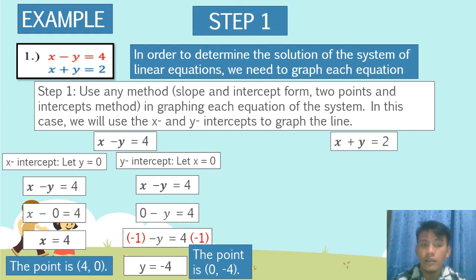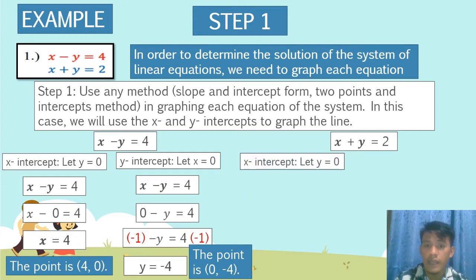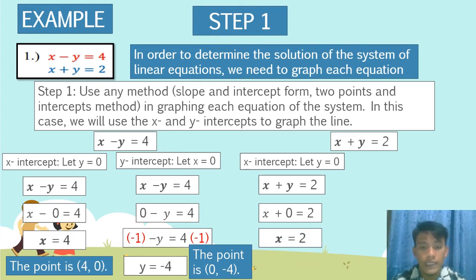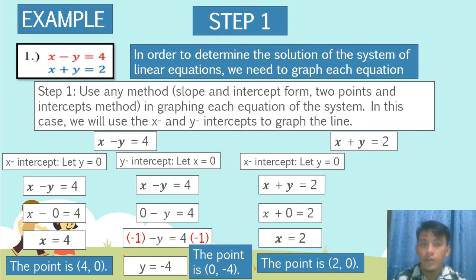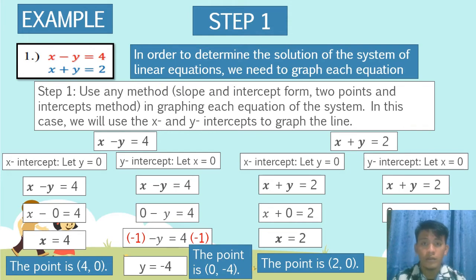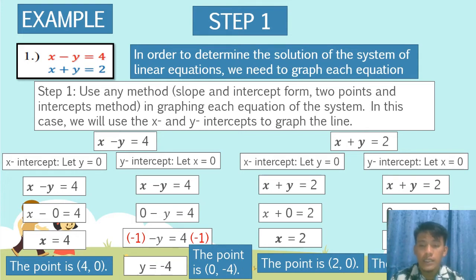Next, we use the second equation, x plus y is equal to 2. To get the x-intercept, let y equal to 0: x plus 0 is equal to 2, so x is equal to 2. The point is (2, 0). To get the y-intercept, let x equal to 0: 0 plus y is equal to 2, so y is equal to 2. The point is (0, 2).